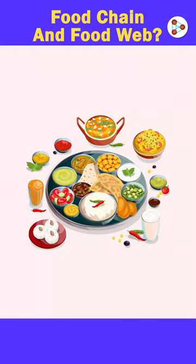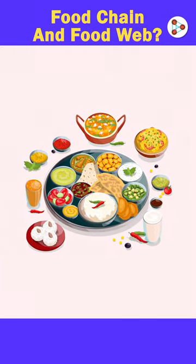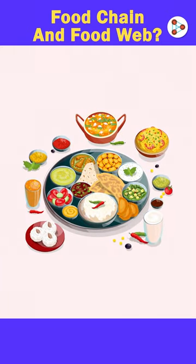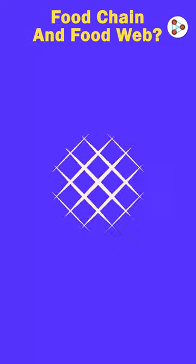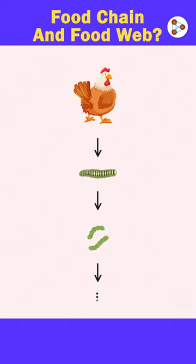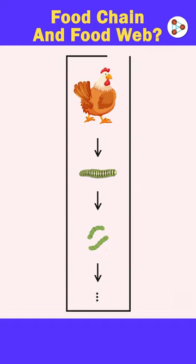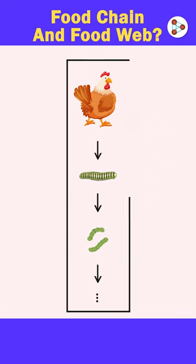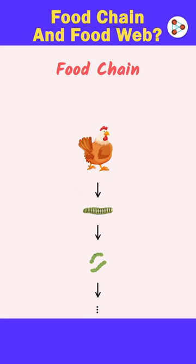We consume food to get energy and do our day-to-day activities. Some of us consume poultry, which is chicken. Chicken eats worms for survival, worms eat microbes from the soil, and this goes on. This one single chain of who eats whom is called the food chain.